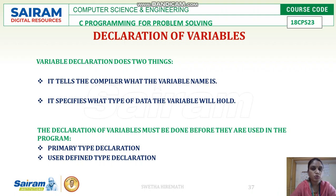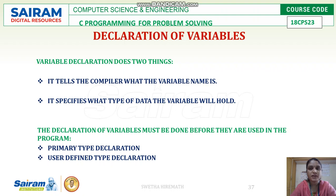Variable declaration will do two things. First, it tells the compiler what the variable name is — it tells the compiler to identify the variable name. Then it specifies what type of data the variable will hold. So first the name has to be finalized and later what type of data this variable has to hold has to be declared. Both these things will be specified to the compiler.